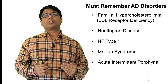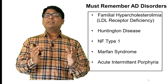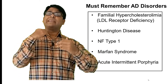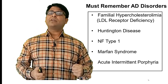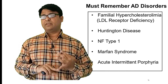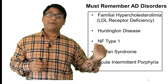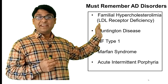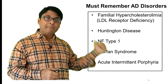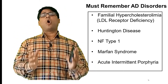At the end, there is a long list of autosomal dominant disorders, but I will give you 5 to 6 diseases in each category which are worth remembering. The key autosomal dominant disorders to remember are: Familial hypercholesterolemia (LDL receptor deficiency), Huntington disease, Neurofibromatosis type 1, Marfan syndrome, and Porphyria acute intermittent. You should remember these by heart, as they are very commonly asked in examinations.